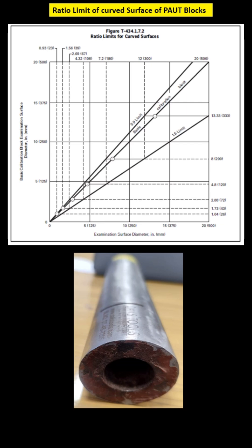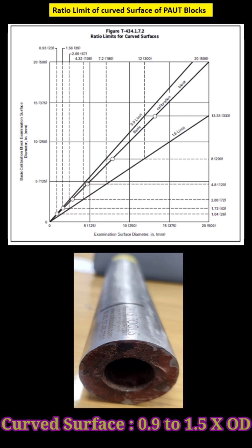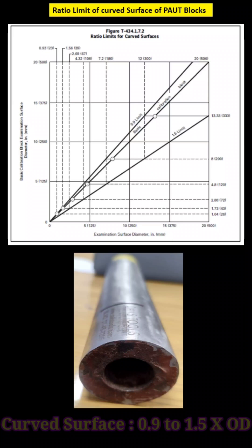As per ASME Section 5 Article 4, if you are using less than 500 mm it will be considered as piping, and more than 500 mm it will be considered as non-piping or flat calibration block we can use.